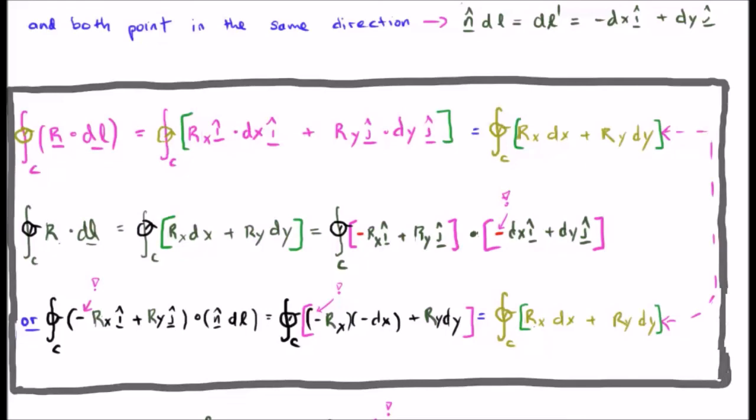Consider taking the dot product of minus R sub X i hat plus R sub Y j hat with minus DX i hat plus DY j hat. This of course also equals R sub X DX plus R sub Y DY, which is of course the closed line integral of R dot DL, which is exactly what we started with up here.